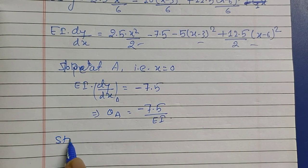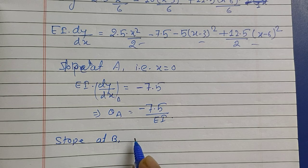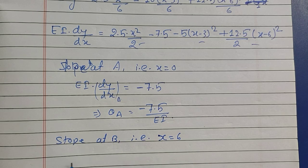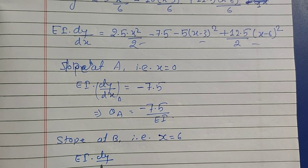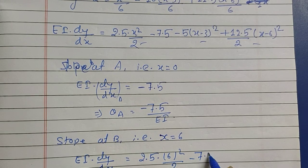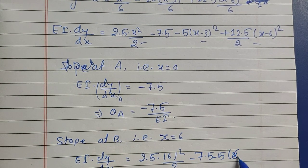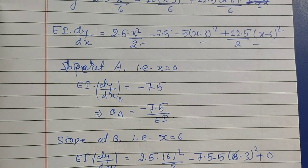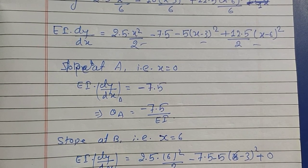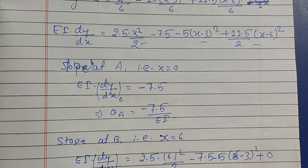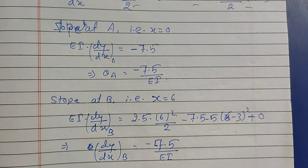For slope at B, we set x = 6. The equation becomes EI·(dy/dx) = 2.5×(6²)/2 − 7.5 − 5×(6−3)² + 0. Solving this gives dy/dx at B = −7.5/EI. This completes the slope calculations at both supports.